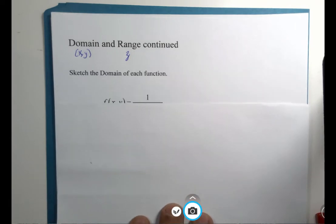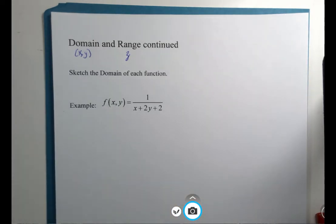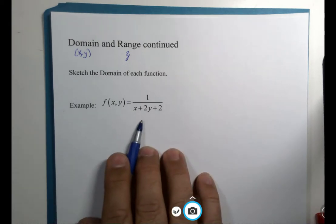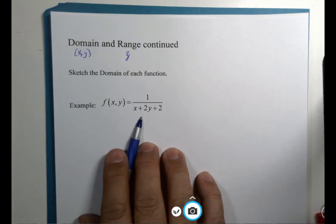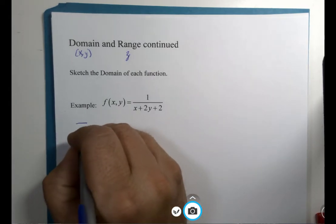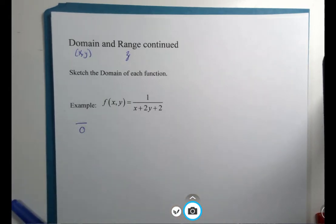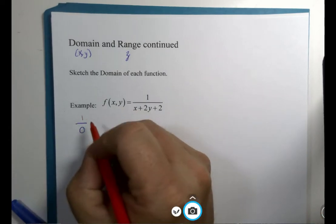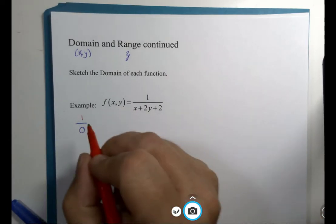Our first example we're going to look at is what you might call a rational function. We have the possibility of dividing by zero, and one over zero is not real. It's undefined.